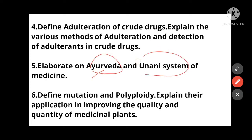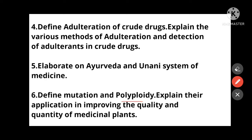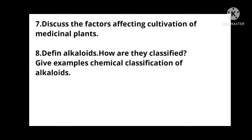Elaborate on the Ayurvedic and Unani system of medicine — write some notes on Ayurvedic, Unani, and Homeopathy. Then: Define mutation and polyploidy, and explain their application in improving the quality and quantity of medicinal plants. Define both mutation and polyploidy, write some description, then cover their applications.